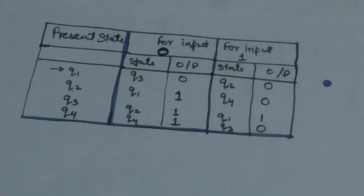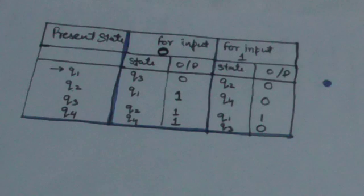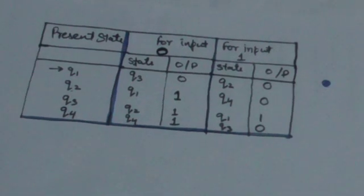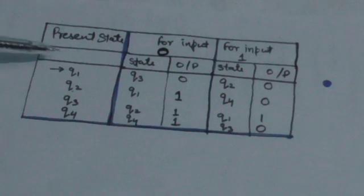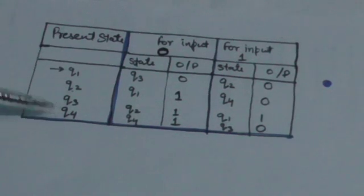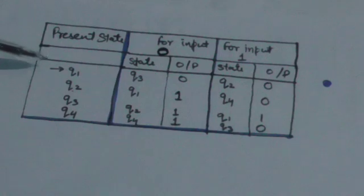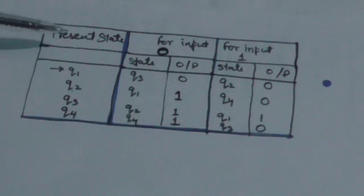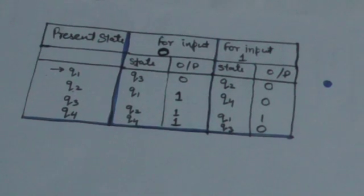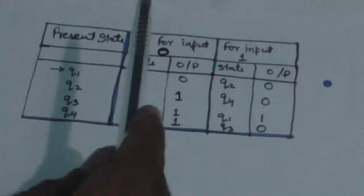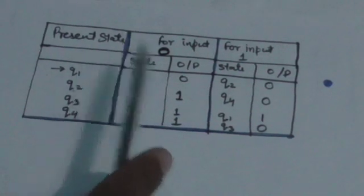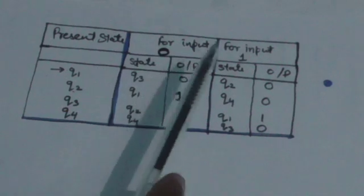Now here is a Mealy machine represented in tabular form. All states are mentioned: Q1, Q2, Q3, Q4 — so in this Mealy machine there are only four states. The initial state is indicated by putting an arrow before it; here Q1 is the initial state. There are only two input symbols which this Mealy machine can read: 0 and 1.